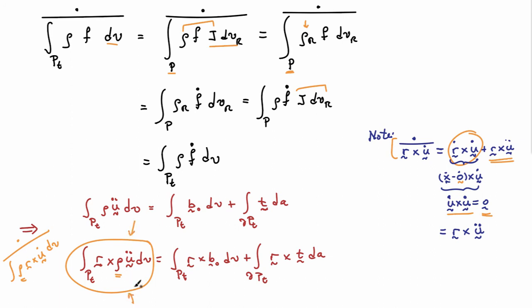These relationships here are the expressions for global linear and angular momentum balance that we will later use to determine the local expressions for linear and angular momentum balance. But again, it's always important to remember these are supposed to hold for every part P of the body BT that's considered to be an experimental fact.